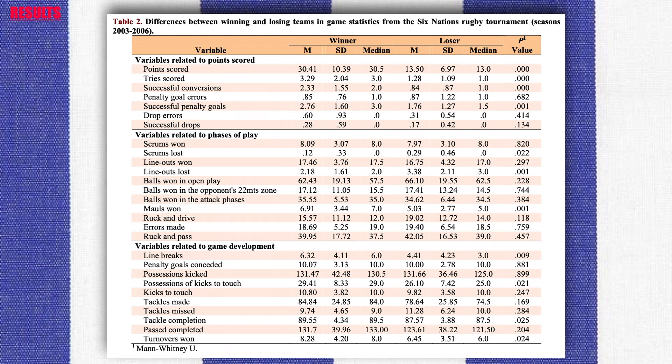For the second group of variables, phases of play, winning teams had averages that were significantly higher in the variable mauls won. Winners also had non-significantly higher averages in the variables scrums won, lineouts won, and balls won in the attack phases. Losing teams had significantly higher averages for the variables scrums lost and lineouts lost. Additionally, losing teams had non-significantly higher averages in the variables balls won in open play, balls won in the opponents' 22m zone, ruck and drive, and ruck and pass.